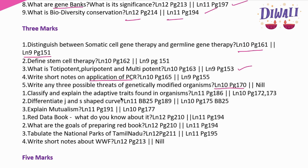Next, classify and explain the adaptive traits found in organisms — lesson 11, page 186; lesson 10, pages 172 and 173. Differentiate J-shaped and S-shaped curve — very very important, 99 percent expected in the question. Lesson 11: book back 25th question, page 189; lesson 10, page 175, book back 25th question. Explain mutualism — lesson 11, page 191; lesson 10, page 177.